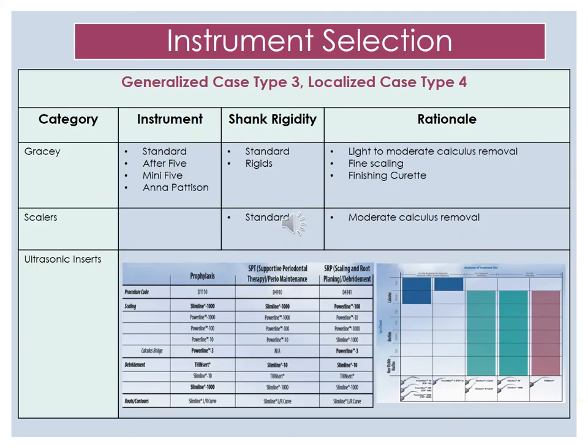The instruments we will be using are the Graceys — the standard, the after five, the mini, and Anna Patterson's. The shank rigidity would be standard and rigid. The rationale for using these instruments is because she will present with light to moderate calculus, also requiring fine scaling and finishing strokes. We would like to use our standard rigid scaler for moderate calculus removal.